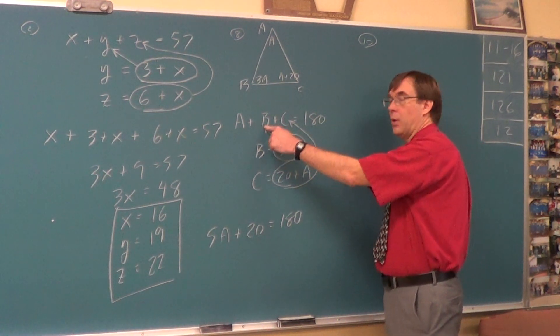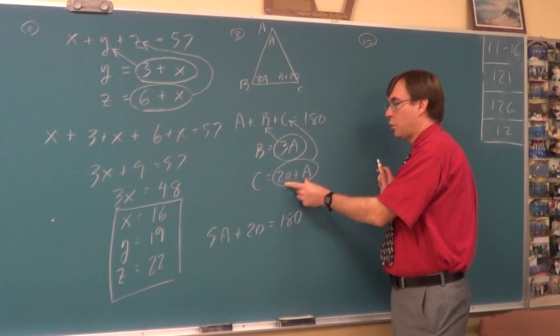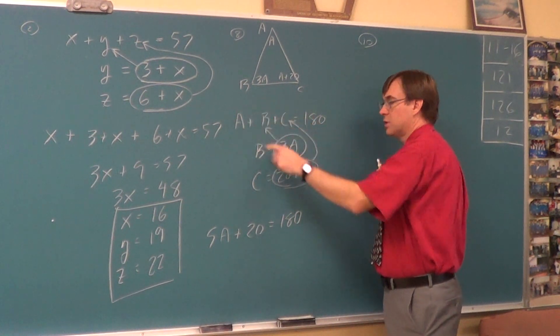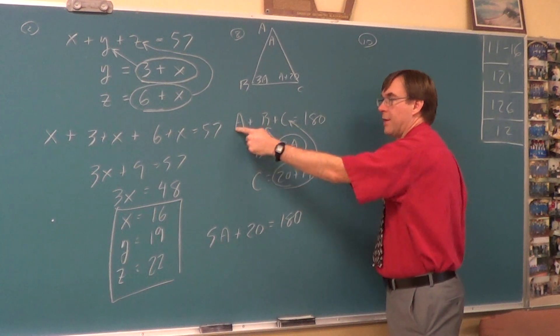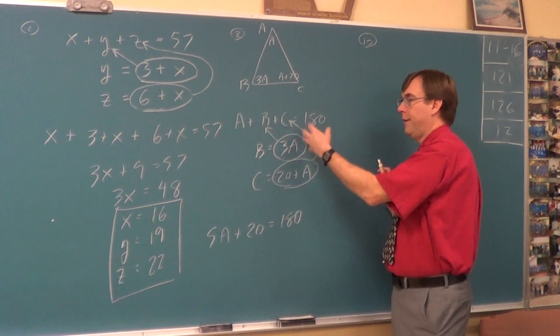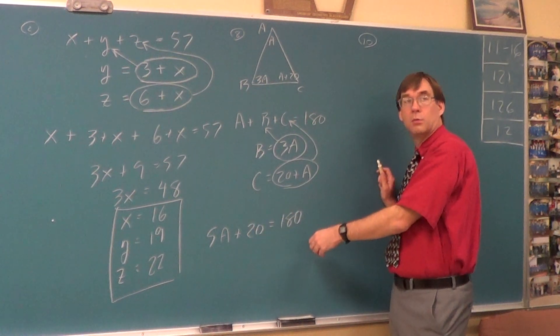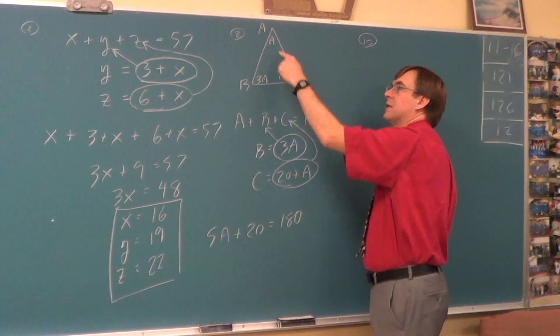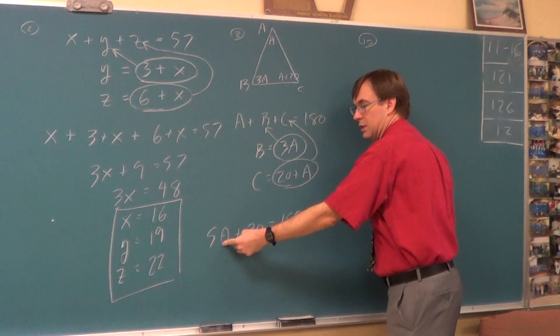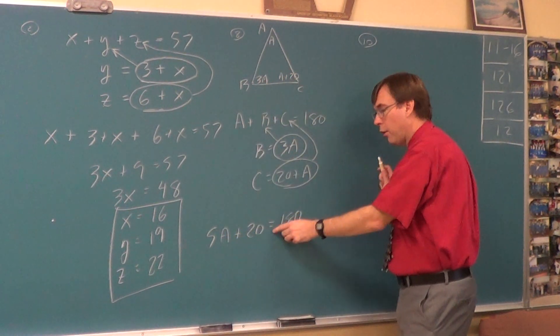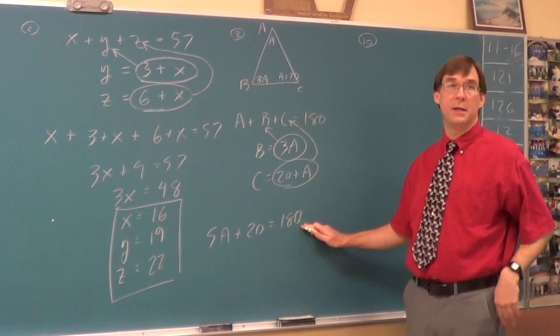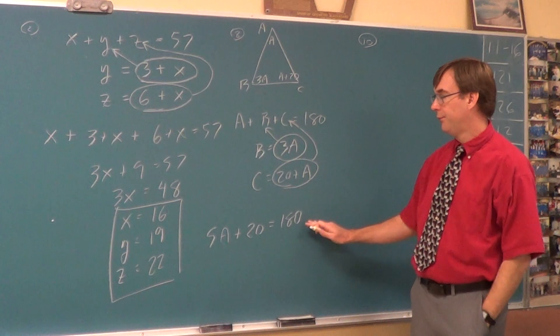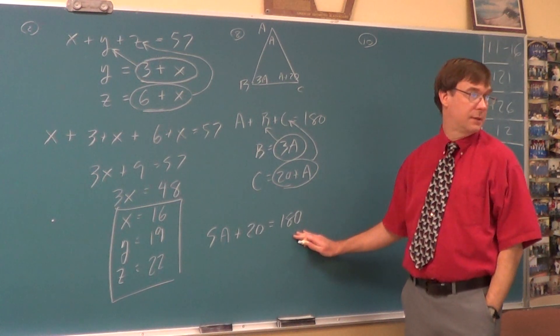The 3A can replace the B. The 20 plus A can replace the C. So if we add those up, this A, this 3A, and that original A is a 5A. And then there's a 20 straying around as well. Or if we look at the picture, this, this, this, is another way we can see the 5A and the 20 hanging around. Anybody trouble getting to where we are?